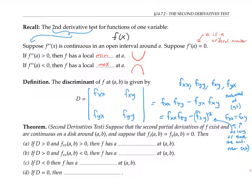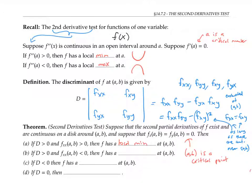Now I can state the second derivatives test. Suppose that the second partial derivatives of f exist and are continuous in a disk around the point (a, b), and suppose also that the first partials f_x and f_y are zero at (a, b), so we know (a, b) is a critical point. If the discriminant is positive and f_xx is also positive, then f has a local min at (a, b). If the discriminant is positive but f_xx is less than zero, then f has a local max at (a, b). If the discriminant is negative, then f has a saddle at (a, b). And if the discriminant is zero, then the second derivatives test is inconclusive — the function could have a local minimum, a local maximum, a saddle, or none of these features.